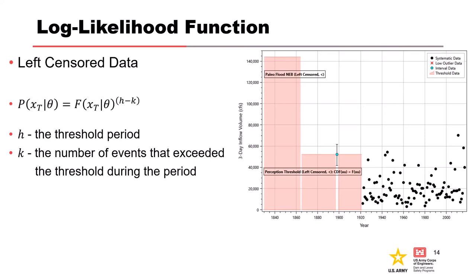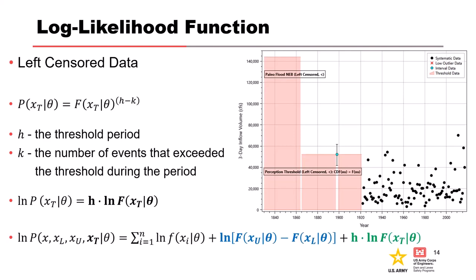H is our threshold period — how many years is that perception threshold, whether one year up to hundreds of years for an NAB. K is the number of events that exceed the threshold during the perception threshold period. For the most part, we're assuming no events exceed that shaded period, so we assume K equals zero. Making that assumption and switching to log space, the equation simplifies: all we've got is the length of the threshold period H times the natural log of the upper threshold given theta. This looks similar to interval sensor data — the difference is the lower bound is set to zero and drops out.